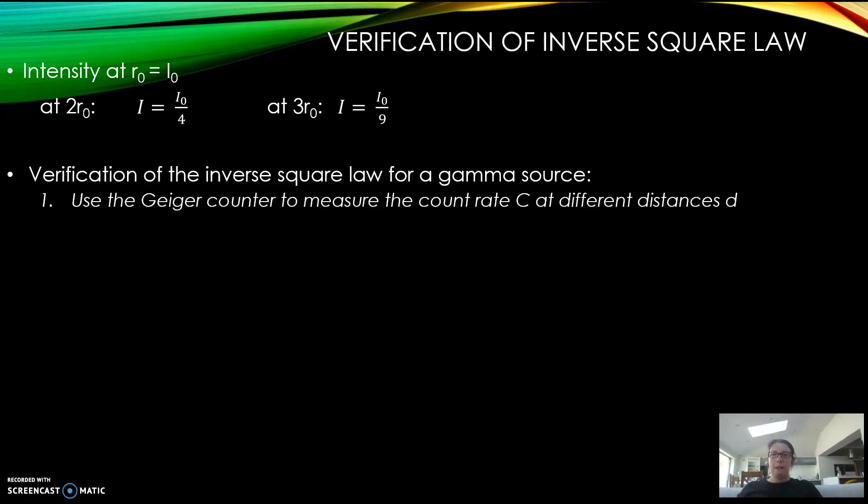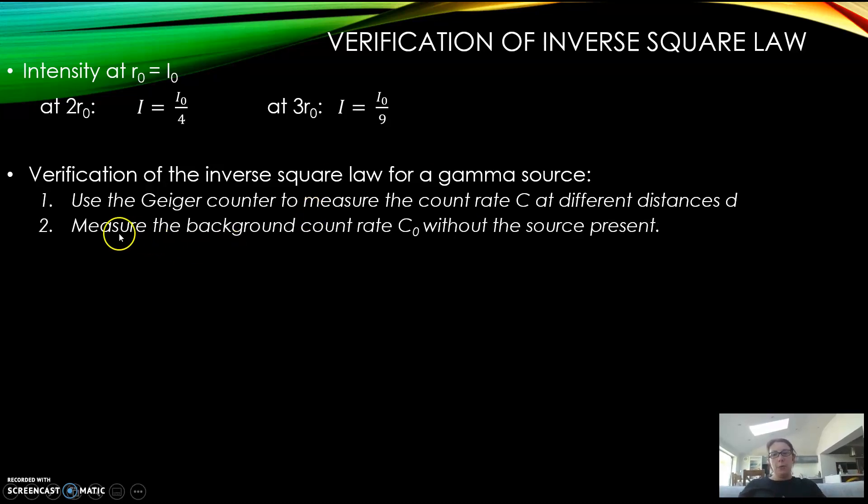If you want to verify the inverse square law for a gamma source, which we will have to do as a required practical, you use a Geiger counter to measure the count rate C at different distances. The count rate is how many photons are hitting the source per second - it's not the whole radiation being emitted, because remember you're only collecting it in one direction. First, you measure the background count rate, which we call C₀, without the source present.